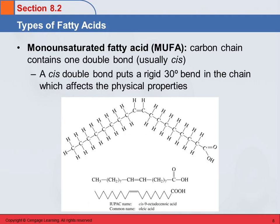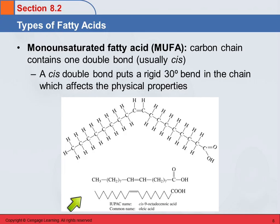So saturated fatty acids only contain single bonds. A monounsaturated fatty acid, or MUFA, has one double bond, and the naturally occurring ones are almost always a cis double bond. Here's an example of one that has a cis bond — there's no rotation around that double bond, so this puts a permanent kink in the chain. That kink affects the physical properties of the fatty acid because it affects how it can line up with other fatty acids and interact through intermolecular forces. That ends up being a 30-degree bend. Here are two other ways of representing this same fatty acid — this is oleic acid, with the IUPAC name cis-9-octadecenoic acid.